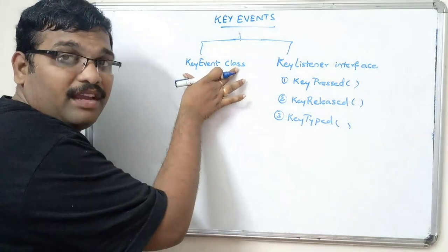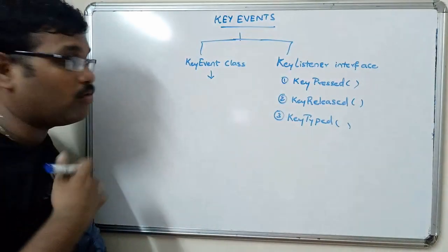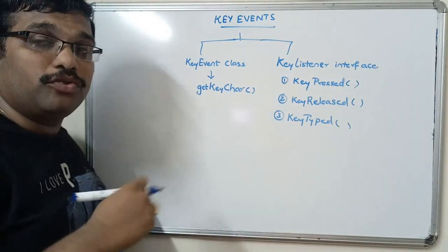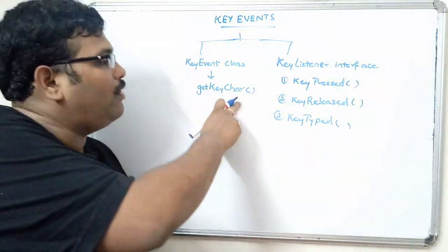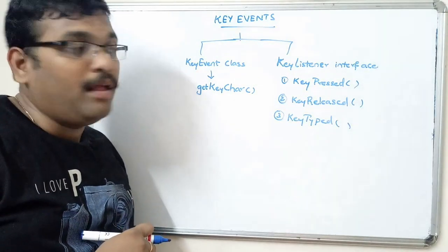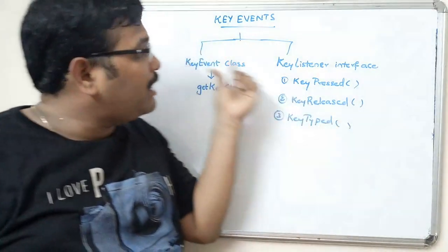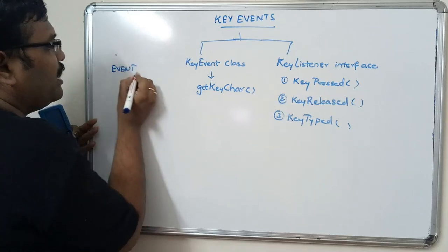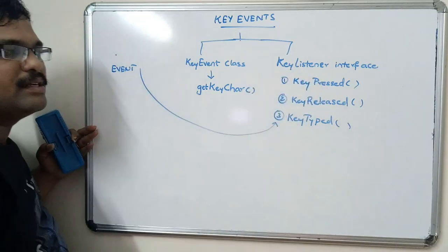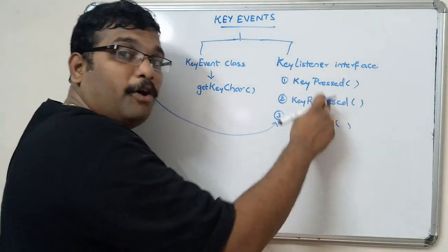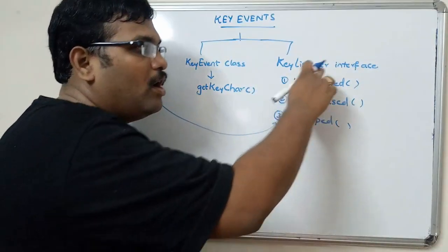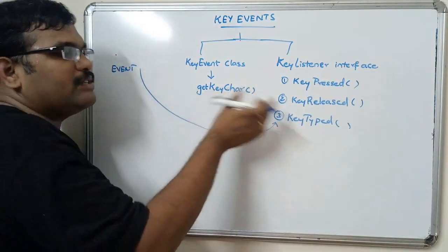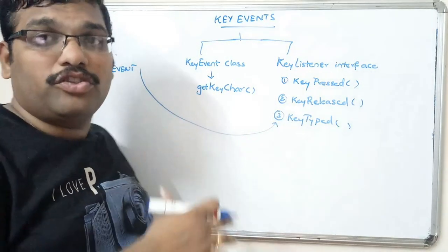In order to implement this, we have to take the help of the KeyEvent class. In this class there is a method called getKeyChar(), which is used to get the character of the key which is typed. Whenever the event is generated, that event will be transferred to the KeyListener interface where we write the definitions for all possible key events — key pressed, key released, key typed — since all these are abstract methods available in the interface.